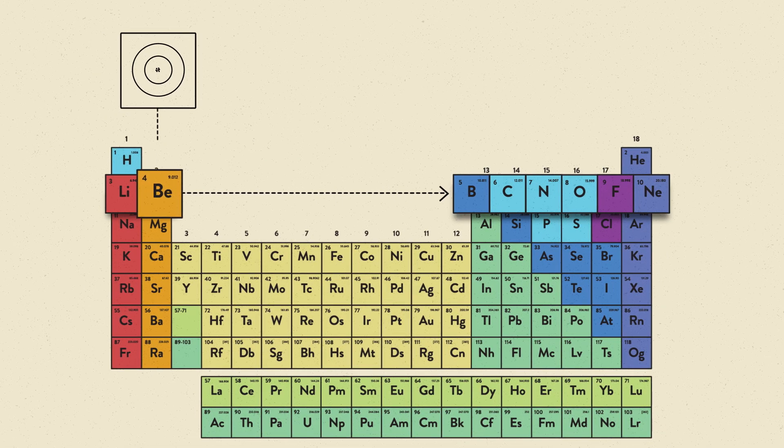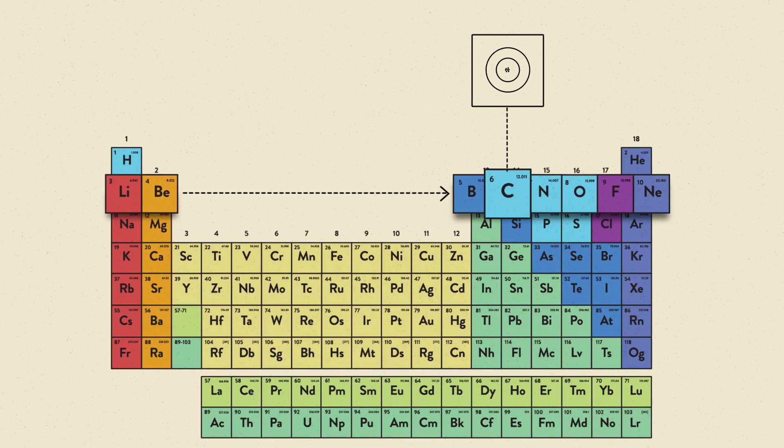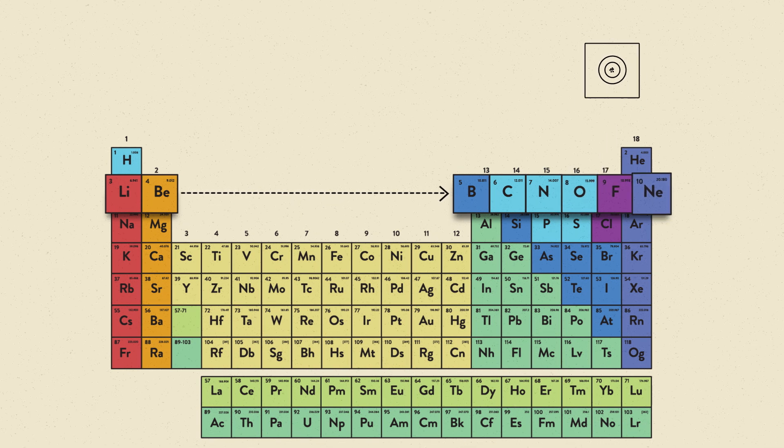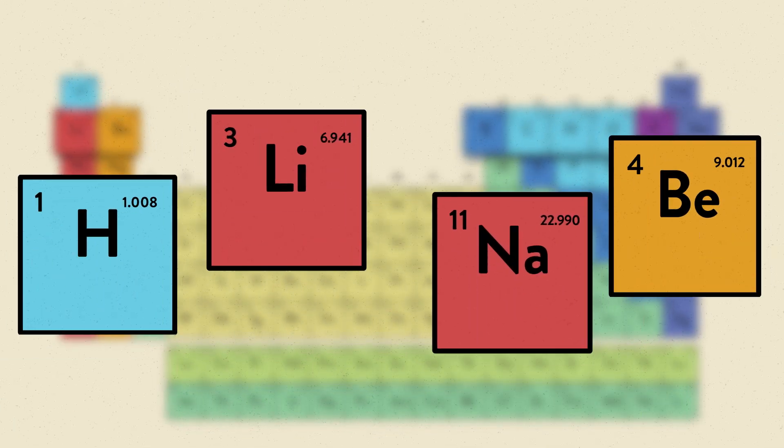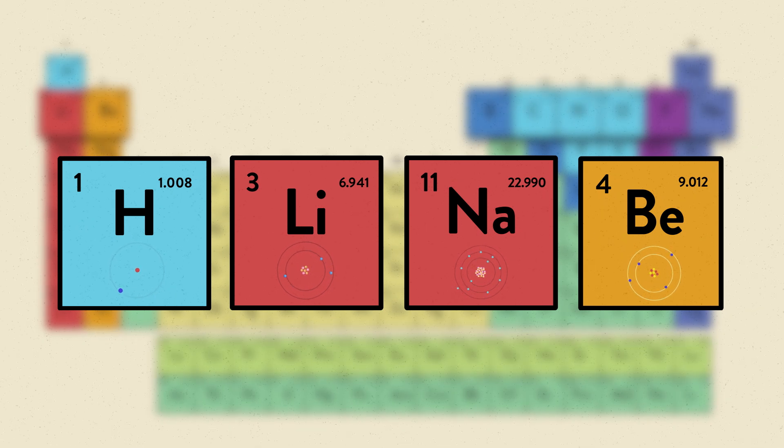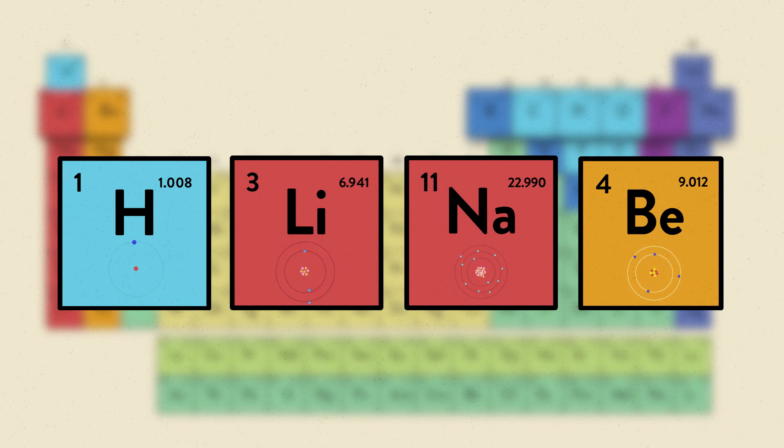So as you continue to travel across the period, the atomic radius continues to decrease. As you can see from the examples provided, the atomic radii change in predictable ways throughout the periodic table.